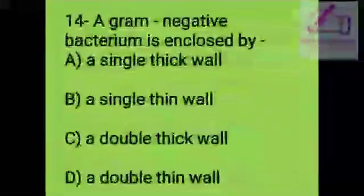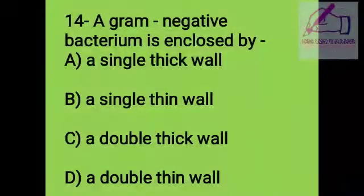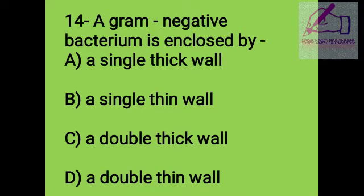Question 14: A gram-negative bacterium is enclosed by: A. A single thick wall, B. A single thin wall, C. A double thick wall, D. A double thin wall. The right answer is D, a double thin wall.